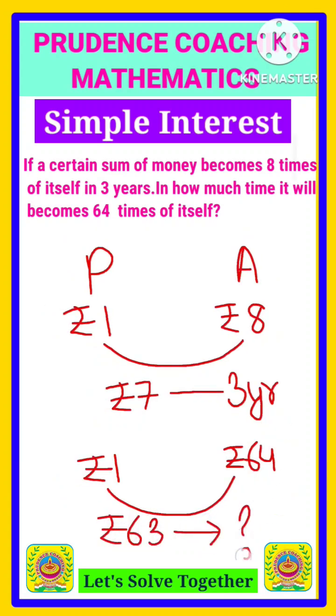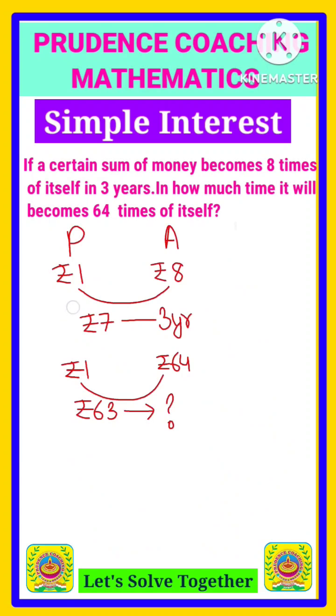You are asked, the 63 will become in how many years. Now let's see how we can find out. So rupees seven is becoming in three years, you are asked 63 will become in how many years.